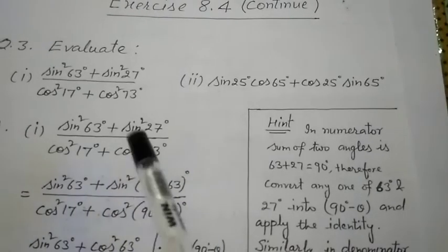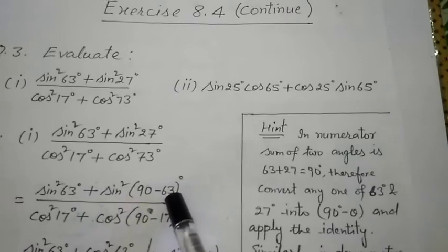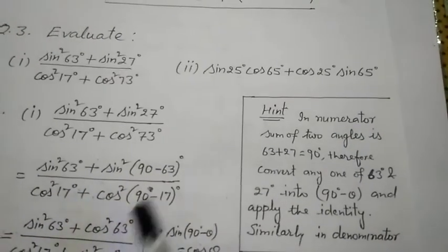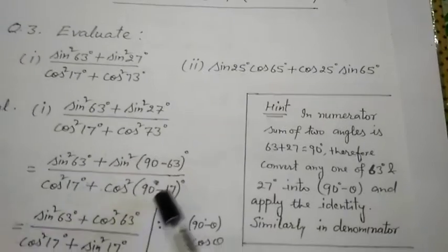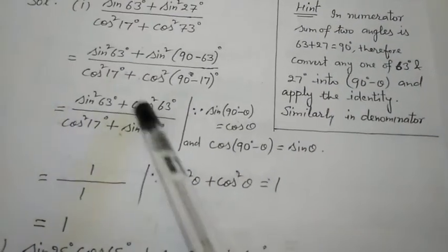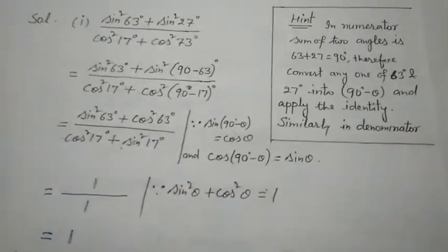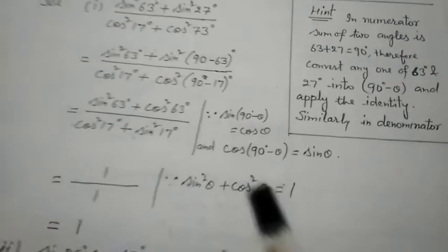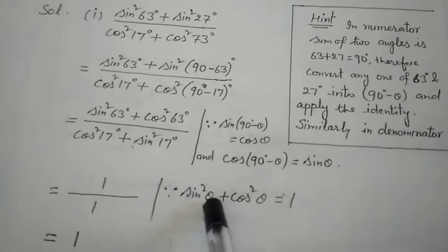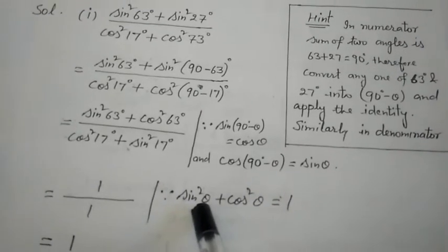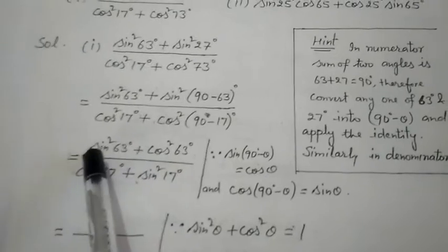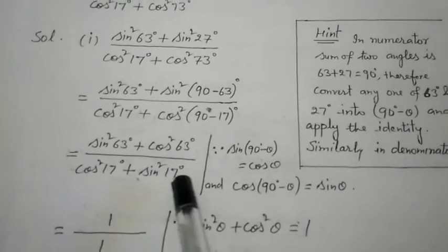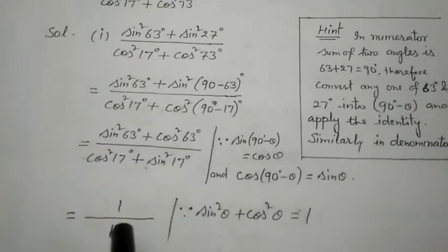We apply the formula: sin(90° − θ) = cos θ. So sin 27° becomes cos 63°, and since it has a square, we apply the square too. Similarly, cos 73° becomes sin 17° using cos(90° − θ) = sin θ. Now in the numerator, sin²θ + cos²θ = 1, and in the denominator, sin²θ + cos²θ = 1 as well — here theta represents 63° and 17° respectively — so the answer is 1/1, which cancels to 1.